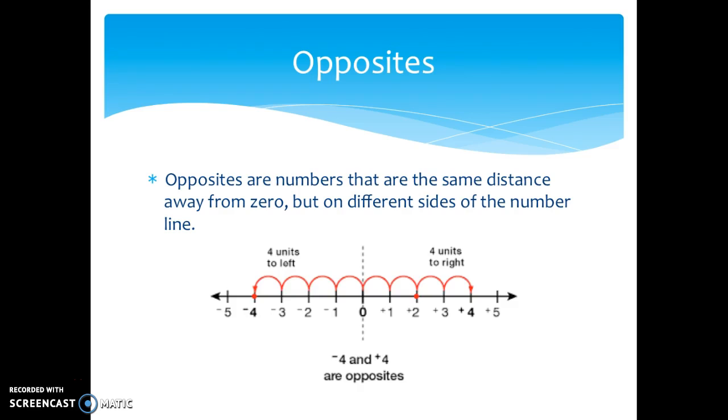So take a look at this example. Zero is in the middle of the number line and negative 4 and positive 4 are opposites because negative 4 is 4 units to the left of zero and positive 4 is 4 units to the right of zero.